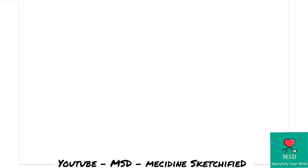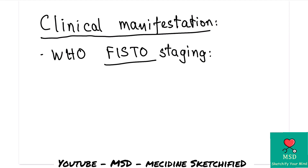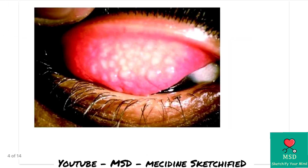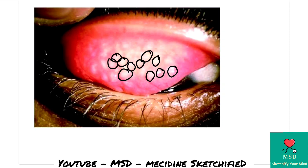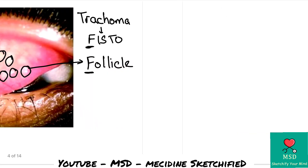Now we will go to the clinical manifestations. The staging used is the WHO FISTO staging. In this first image, you can see many round projections on the upper palpebral conjunctiva. These are the follicles. In FISTO staging, F stands for follicles.